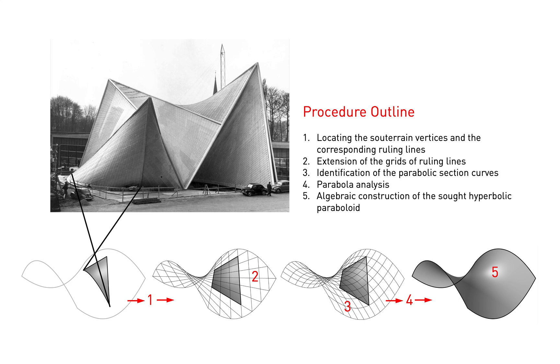Using the Phillips pavilion as an example, we will initially construct the missing souterrain parts of most of its surfaces, then we will extend the grid of ruling lines outward, identify the principal parabolas, analyze those parabolas to find their quadratic coefficients and finally, reconstruct the hyperbolic paraboloid surface algebraically.